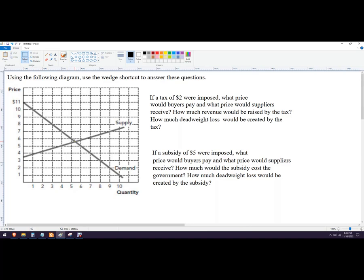That's where they cross. Question here: if a tax of $2 were imposed, what price would buyers pay and what price would sellers receive? This question wants you to use a wedge shortcut, meaning we're going to take a difference of $2.